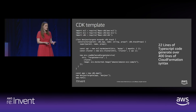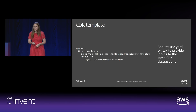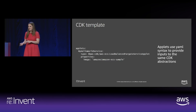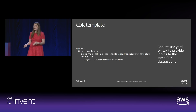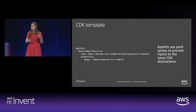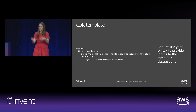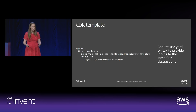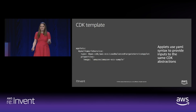Another feature called Applets in the CDK is a YAML version of the TypeScript classes. You can use the same constructs for high-level resource types but in YAML syntax. Here with only a single property — just the image you want to run — it generates all the same resources: the VPC, cluster, Fargate service, task definition, load balancer, listener rule, target group — again generating those 400 lines of CloudFormation.